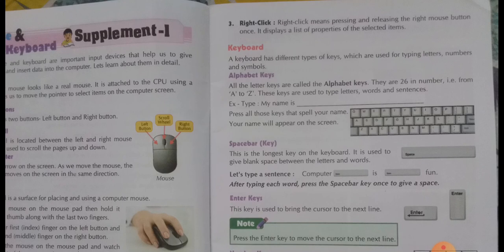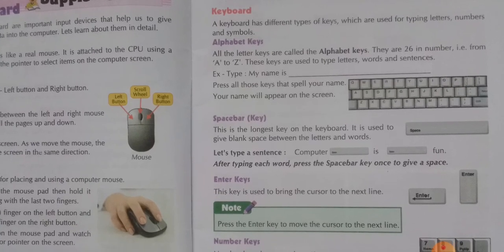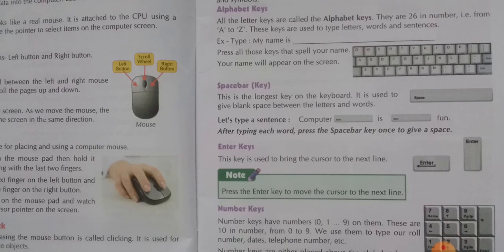Whenever you want to type a word, you need to press the alphabet keys. Some special keys: first is the space bar — it is the longest key, and there is only one space bar key in our keyboard. Next is the enter key. Whenever you want to go to the next line during typing, you need to press the enter key, and there are two enter keys in our keyboard.